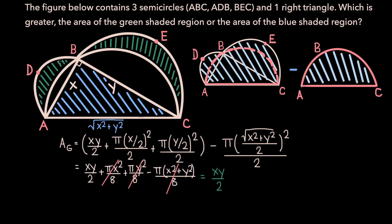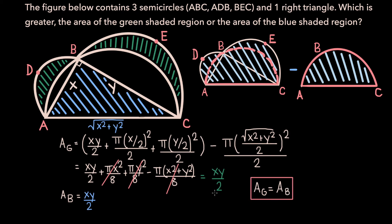Now that we have the area of the green region — which is by far the more complicated one — let's find the area of the blue region. The blue region is just a right triangle, so the area of the blue region is also x times y over 2. You can see that the area of the green region is actually equal to the area of the blue region. And that's what's so fascinating about this problem: the area of the green shaded region, which is composed of these two irregular moon-like shapes called lunes, is equal to the area of the triangle.